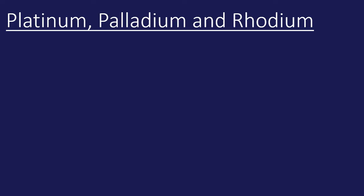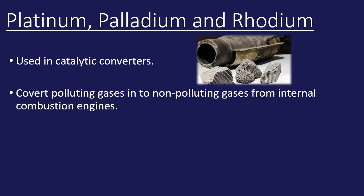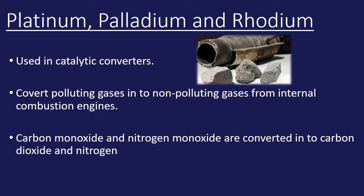One more example: this wasn't actually named in the specification, but it's a very common example. The catalytic converter contains platinum, palladium and rhodium, which are all precious metals. What happens here is it converts polluting gases into non-polluting gases. It's fitted to the back end of an internal combustion engine, and by law all cars have to have these. It converts carbon monoxide and nitrogen monoxide, which are pollutants, into non-pollutant gases such as carbon dioxide and nitrogen.